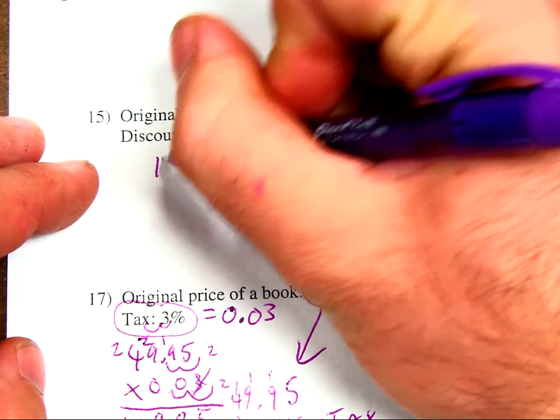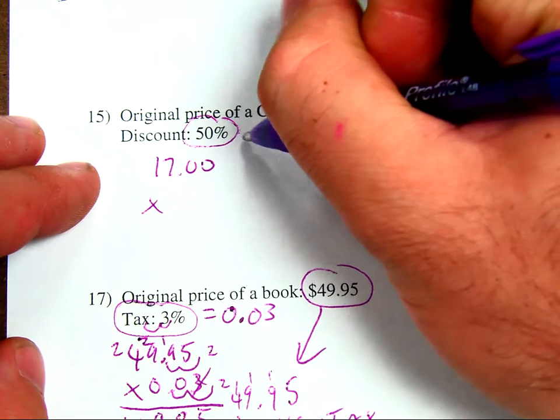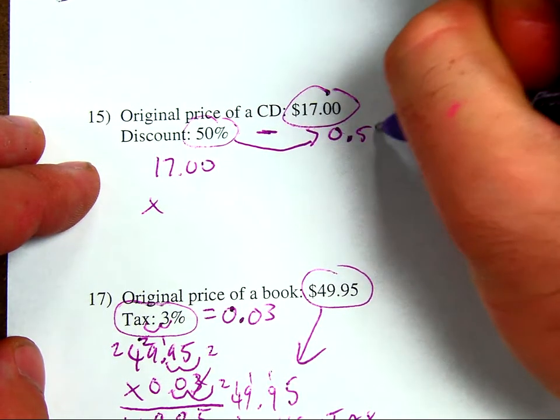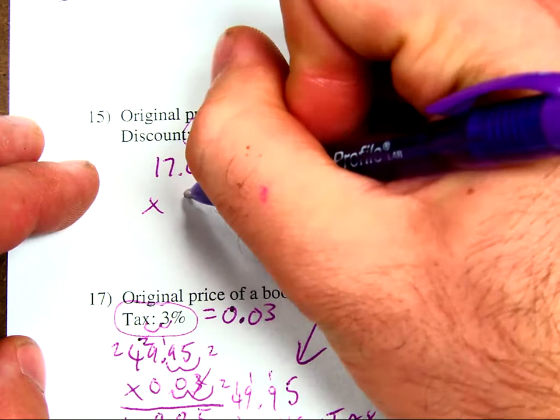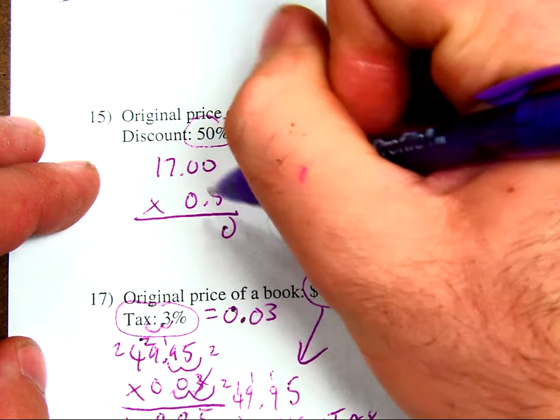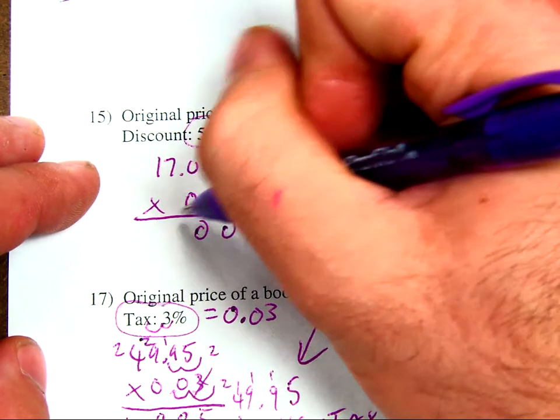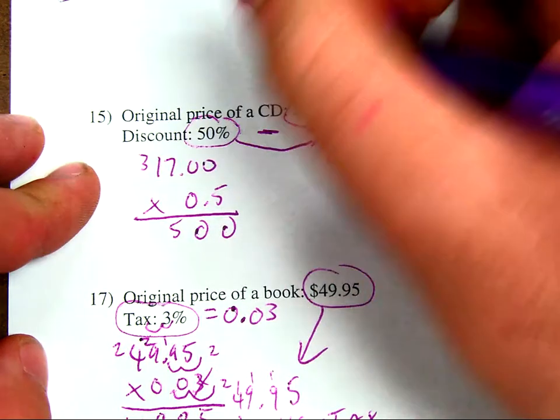So, I have $17 times 50%. 50% converted to a decimal. It's going to be 0.50 or it is 0.5. So, multiply times 0.5. I have 5 times 0 is 0. 5 times 0 is 0. 5 times 7 is 35. Carry the 3. 5 times 1 is 5. Plus 3 is 8.